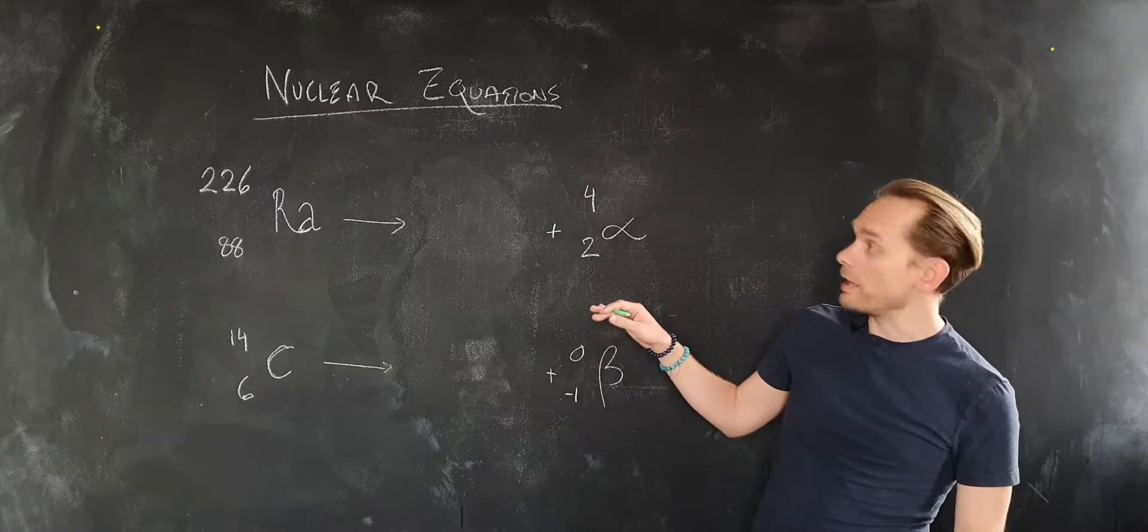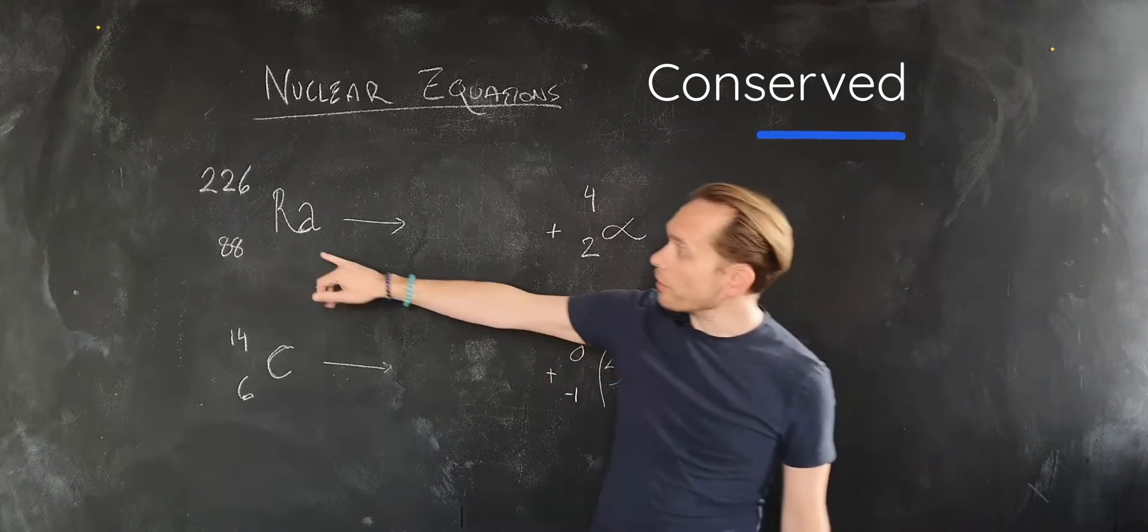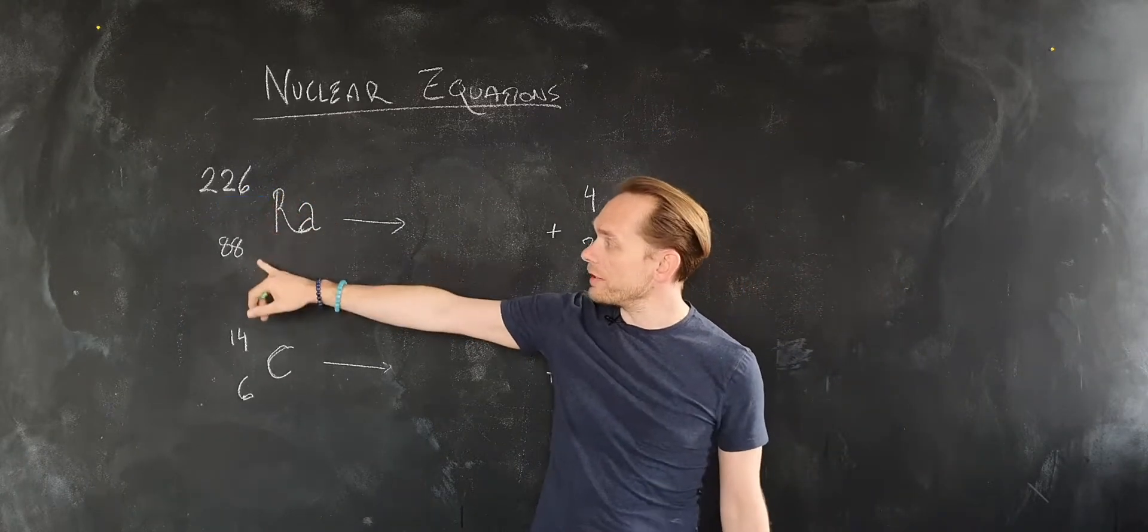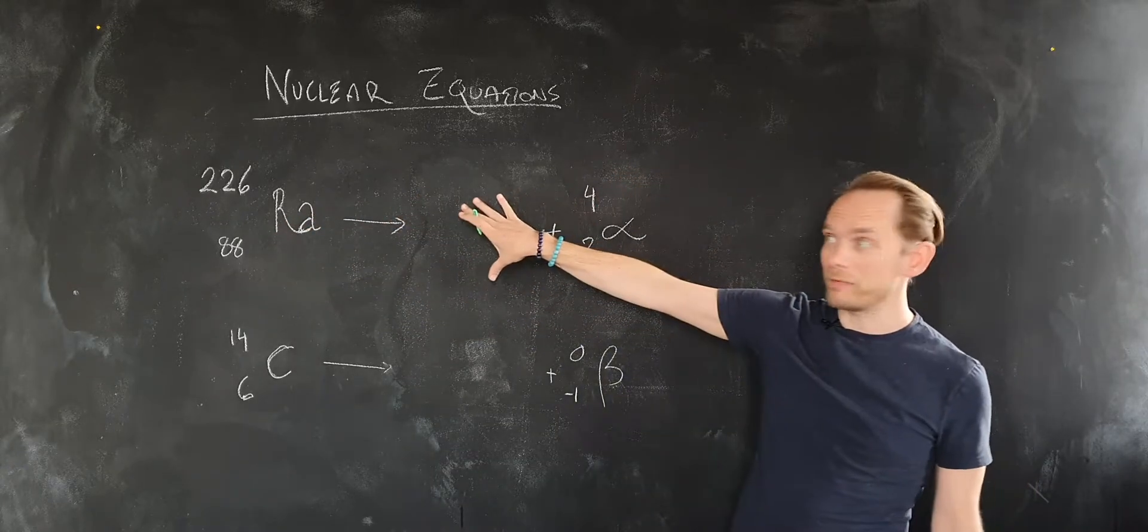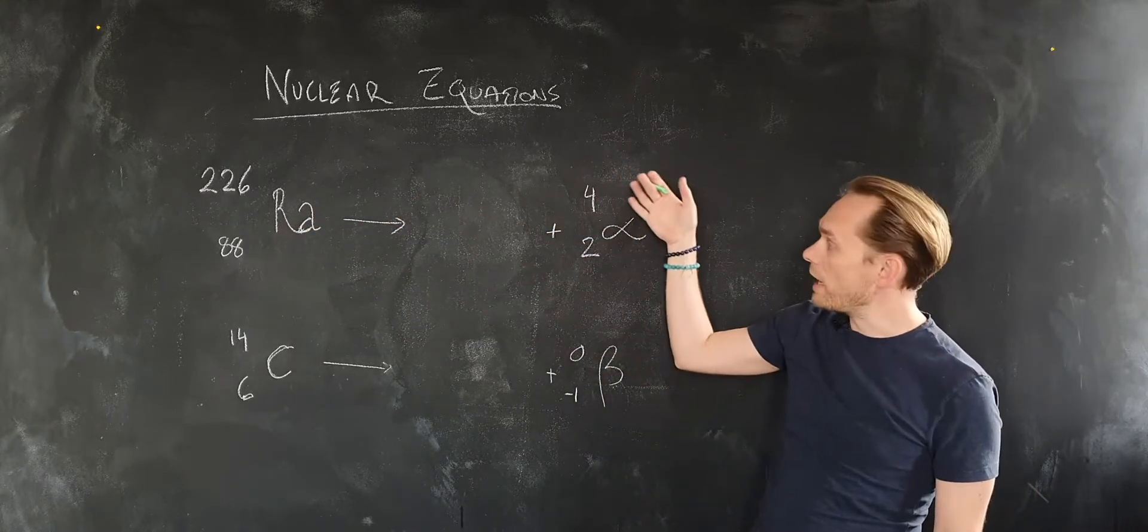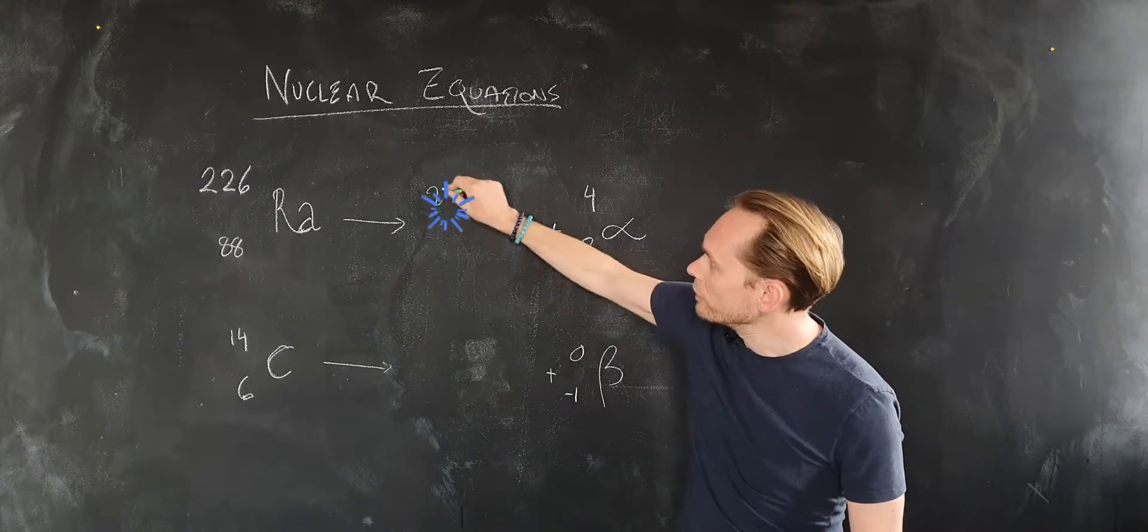The principle to apply is that mass and charge is conserved. So if you've got radium here with a mass of 226 and a charge of 88, that will appear in total on this side as well. Now we know alpha is 4-2, it's got to add to 226, so this number must be 222.